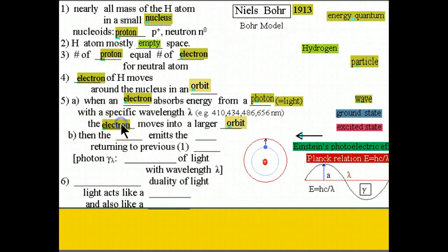Then the electron emits a photon returning to the previous orbit.